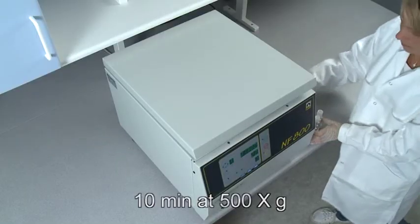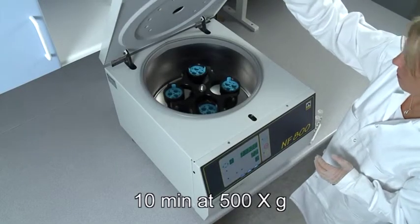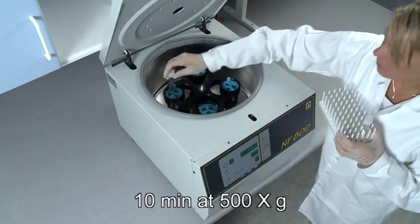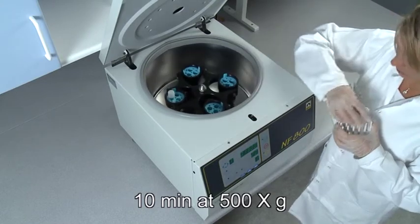Centrifuge for 10 minutes at 500 times G. Calculate the correct rpm for 500 times G for your centrifuge.